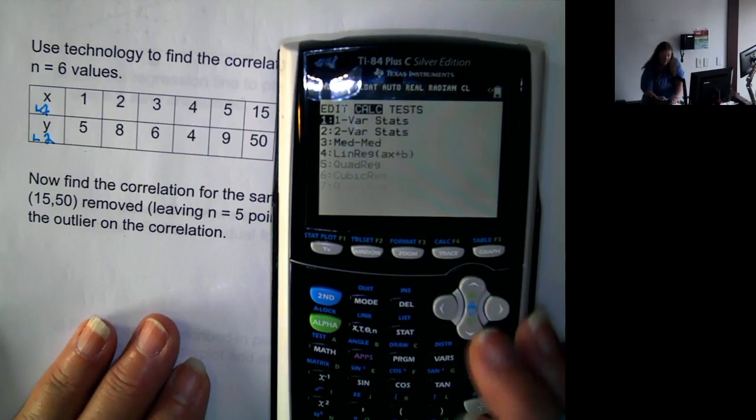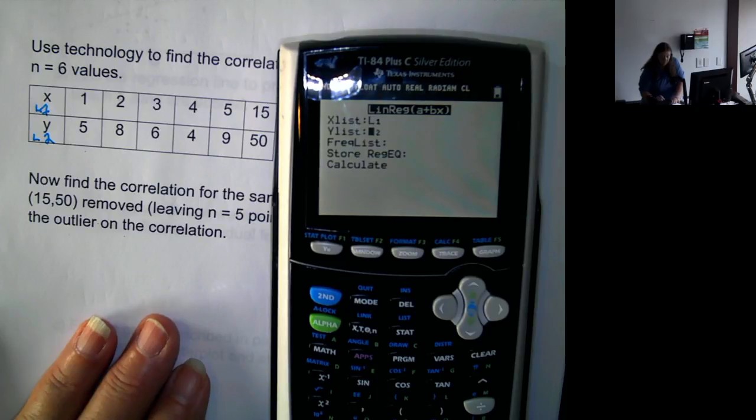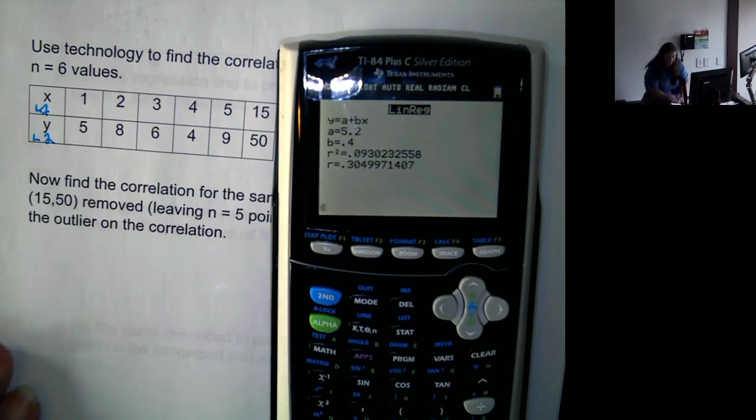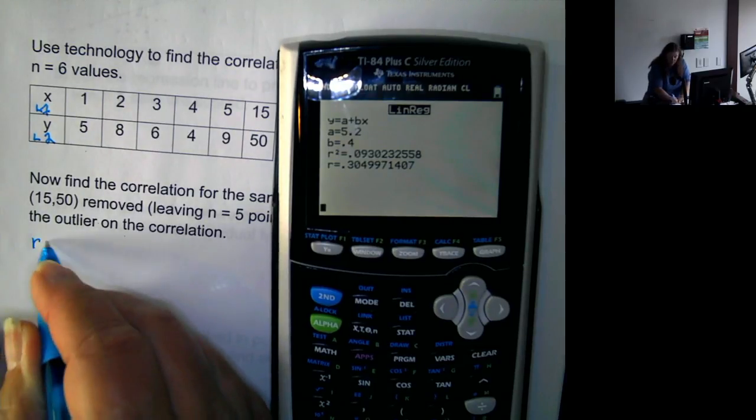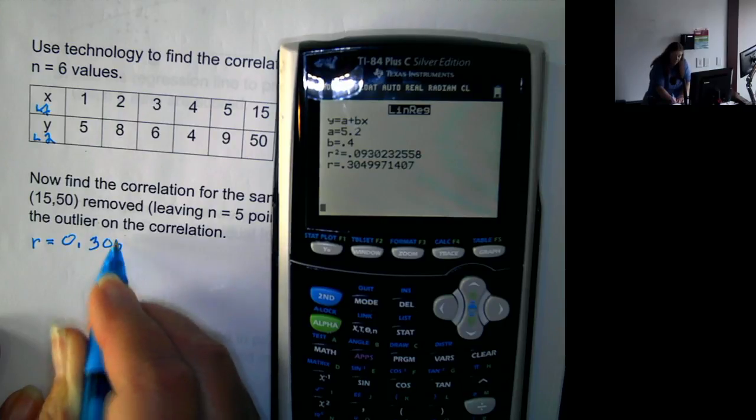Now, go back to stat and calc, down to number 8. And now, correlation is 0.305.